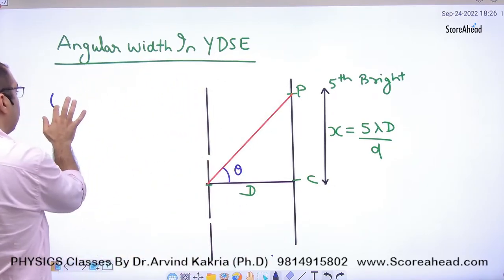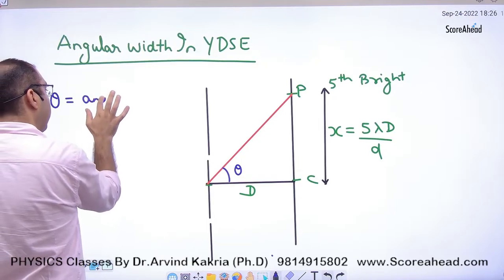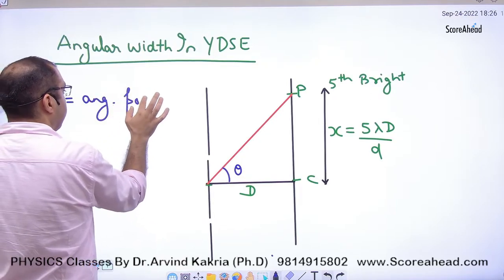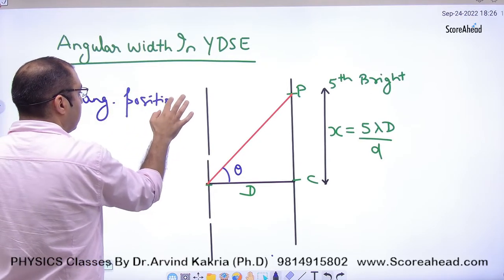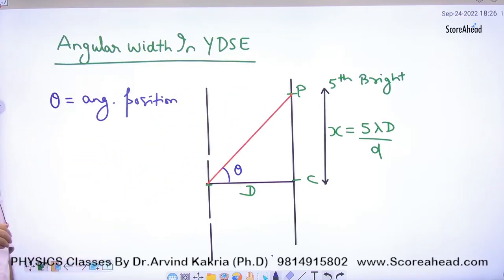This theta, what do they say? It's angular position. Theta is known as position means x, angular position means theta.